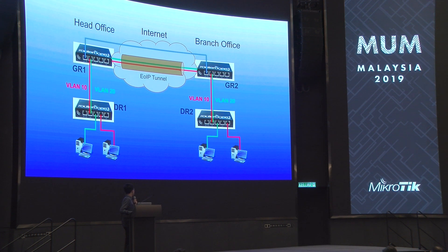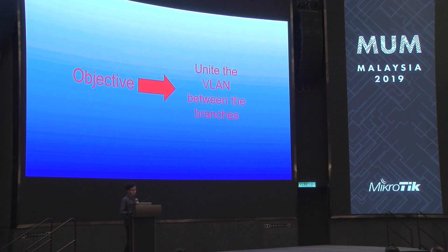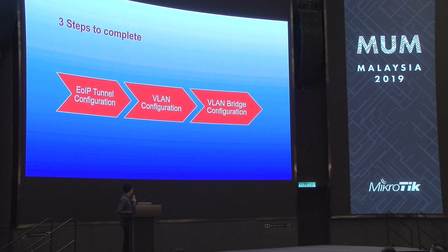This is my topology for VLAN over EoIP. I have a head office connected to a branch office with two VLANs through an EoIP tunnel. I want to unite the VLANs between the branches by tunneling layer 2 through a layer 3 tunnel. First, I will configure the EoIP tunnel, then the VLAN configuration, and then the VLAN bridge configuration.